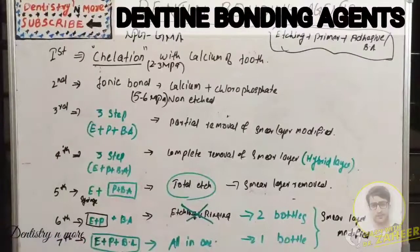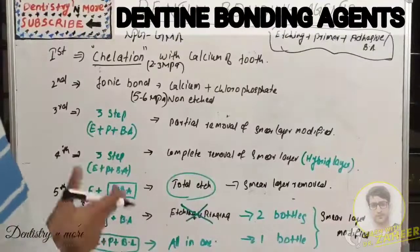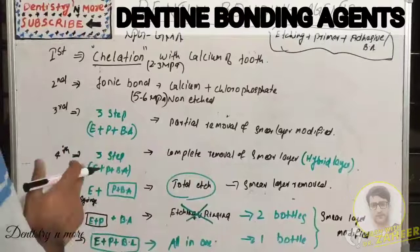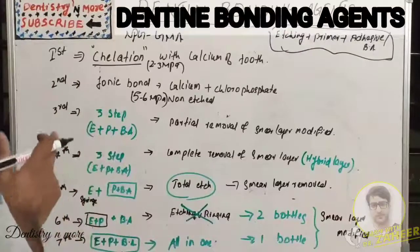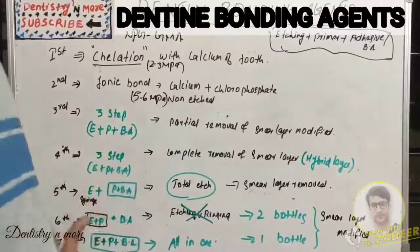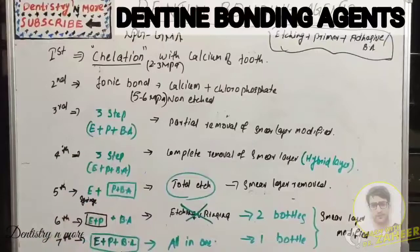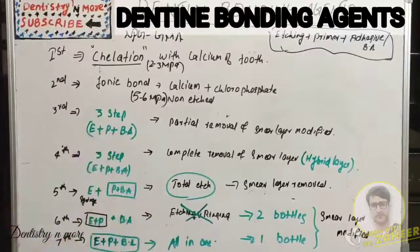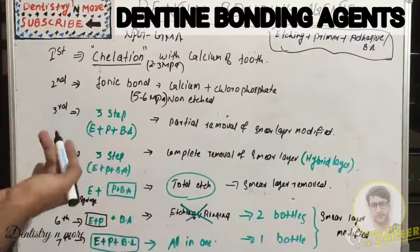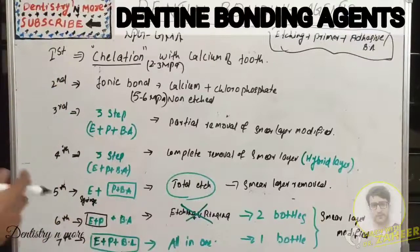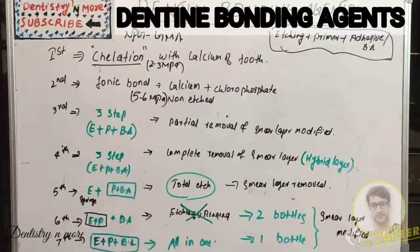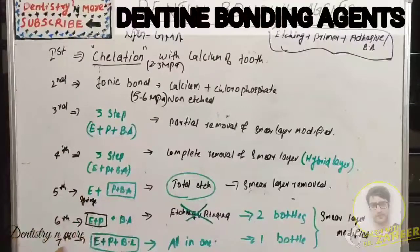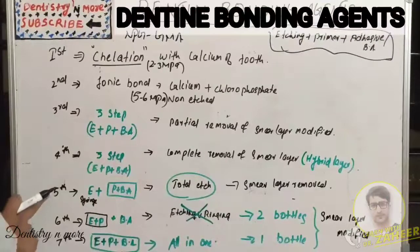The fourth generation was developed in the 1990s with multiple bottles. First, etching using phosphoric acid, then rinsing, then applying adhesives. Common etchants used are phosphoric acid, citric acid, or oxalic acid. Primers include NTG-GMA, HEMA, GBDM, or 4-META. Adhesives are BisGMA with solvents such as acetone, ethanol, or water. Examples include All-Bond 2 and Panavia 21.